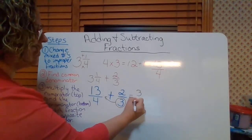Step four: multiply numerator times numerator and denominator times denominator. So right here, 13 times three is 39, over three times four which is 12. Plus two times four is eight, over three times four which is 12. These denominators better be the same — if they're not, we have issues. They have to be the same.